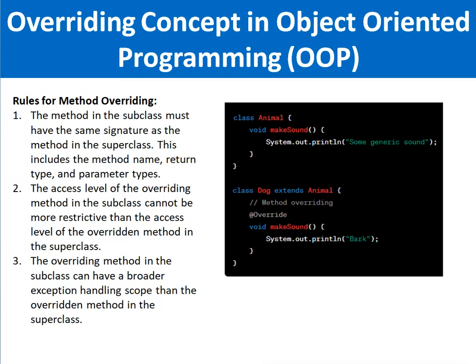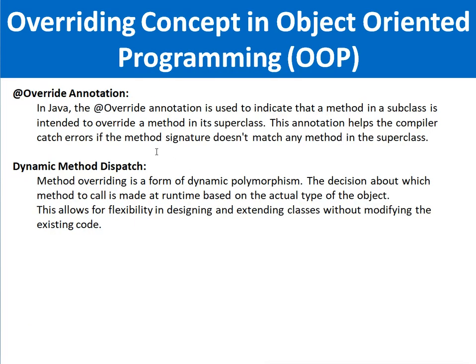The @Override annotation in Java is used to indicate that a method in a subclass is intended to override a method in its superclass. This annotation helps the compiler catch errors if the method signature doesn't match any method in the superclass. We use the @Override annotation in Java for overridden methods.